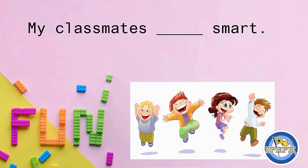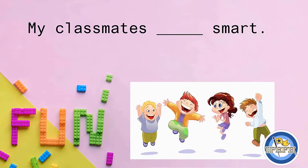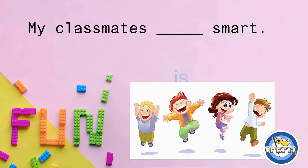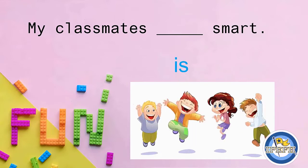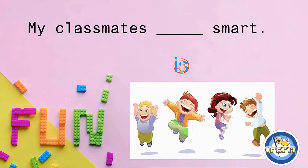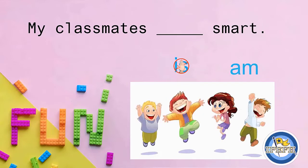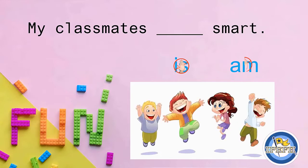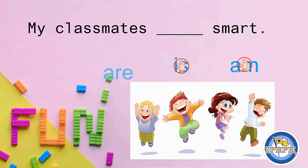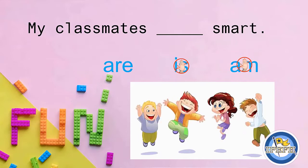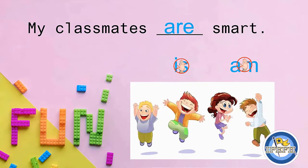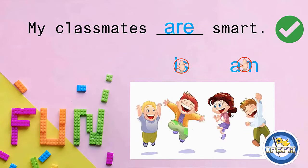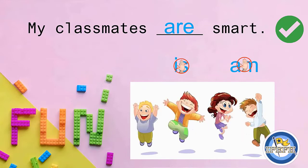Now let's see: 'My classmates... smart.' But it is missing the verb to be. Is it going to be with 'is'? No, incorrect. Is it going to be with 'am' for the special person? No, incorrect. Is it going to be with 'are'? Yes! So the correct sentence is: My classmates are smart.